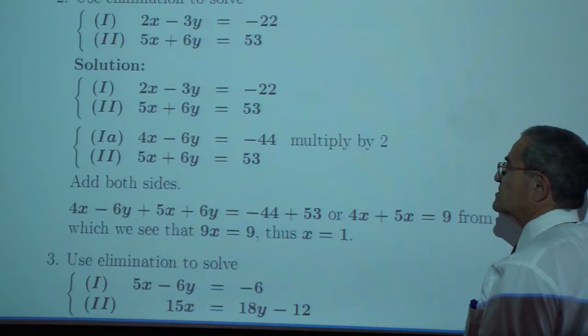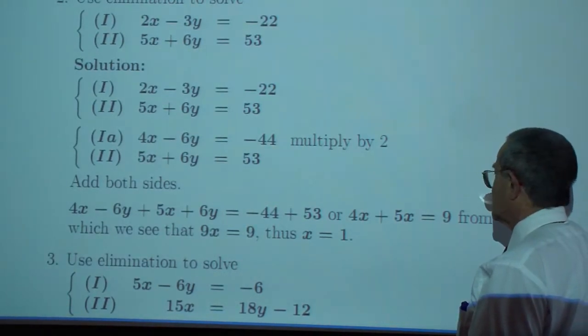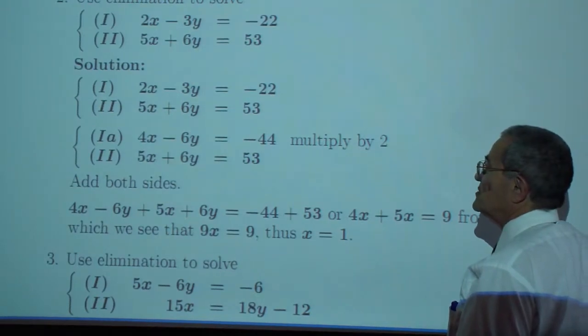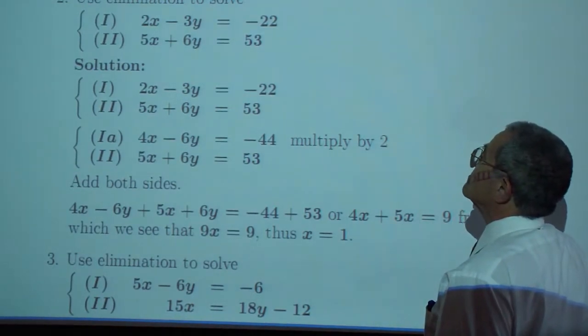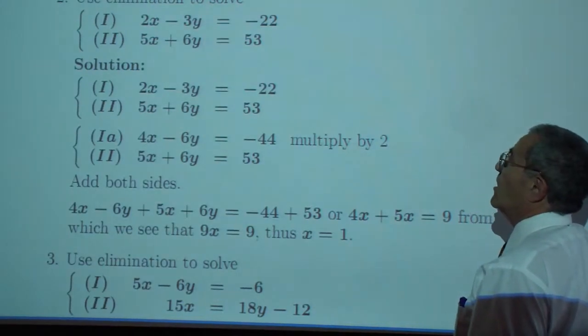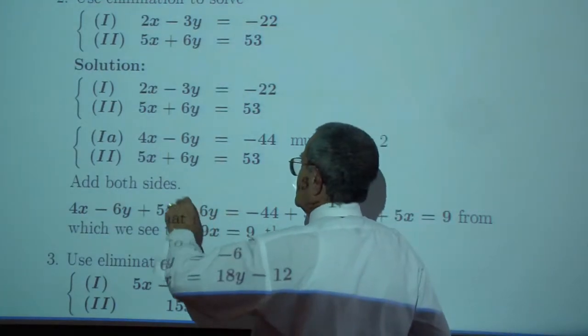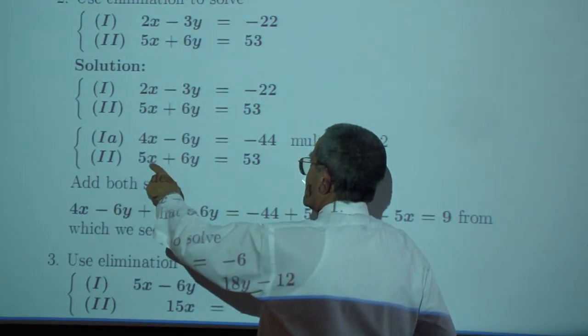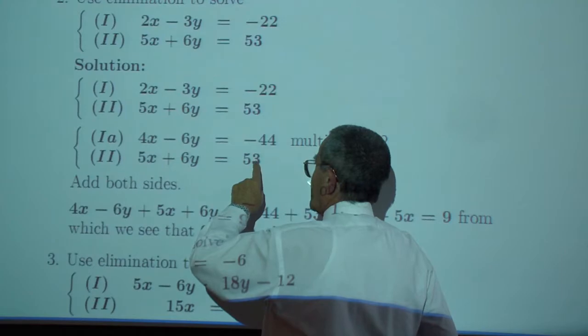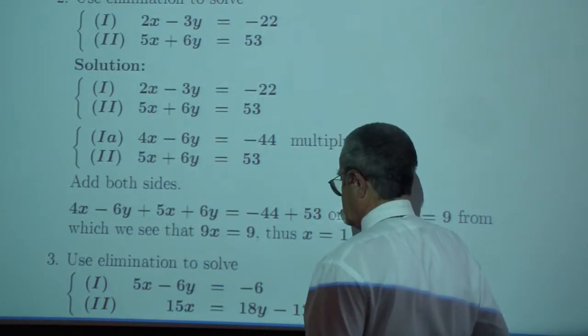Now, what is y? We don't have y. Well, I need to go back into one of the original equations and solve for y. I can do it over here. If x is equal to 1, I subtract 5 from both sides, gives me 48. Divide by 6. 48 over 6 is 8. So it looks like y is equal to 8.